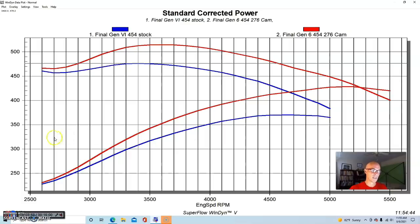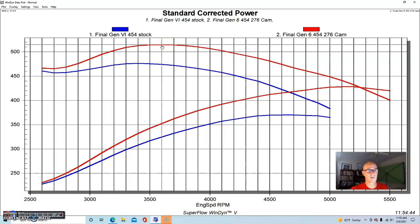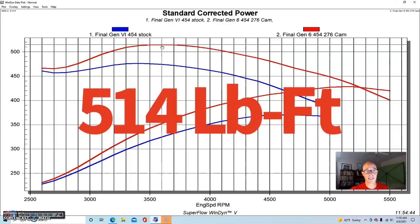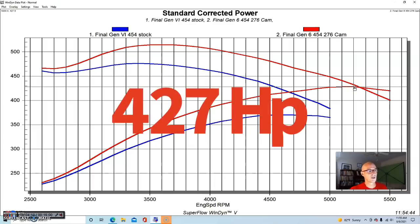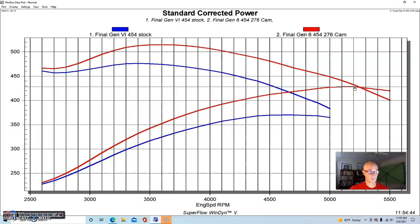And you can see on this example, running this camshaft picked up power basically everywhere from 2600 - the gain was somewhat minimal. But the torque, the peak torque jumped up to 514.6 foot-pounds, while the peak horsepower was up to 427.9, or we'll call that 428 horsepower.